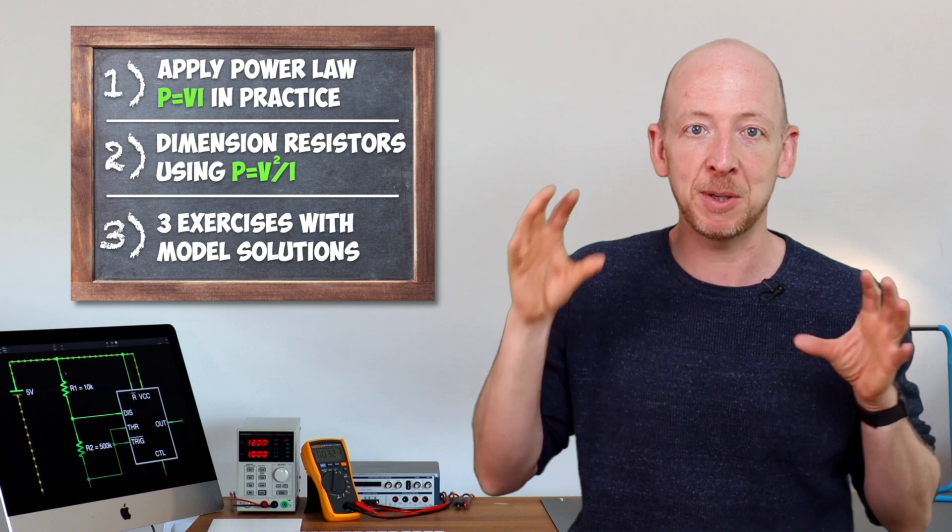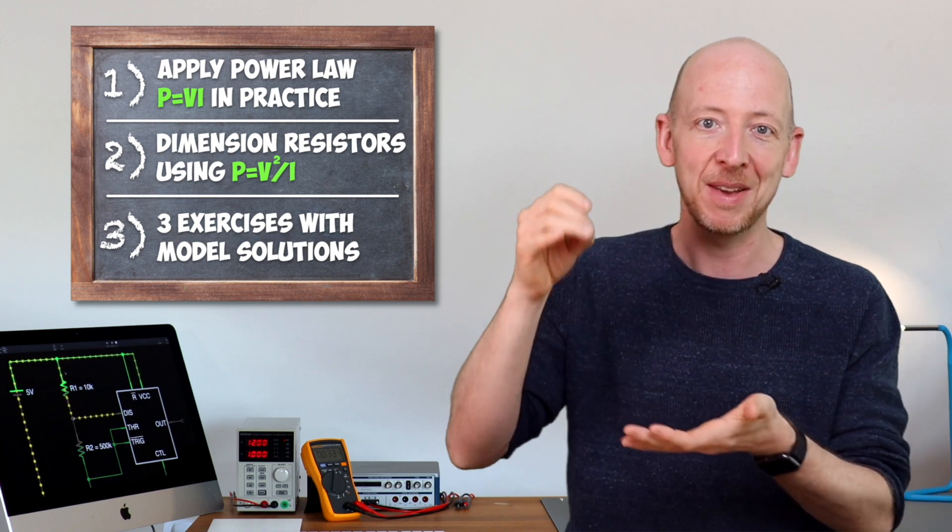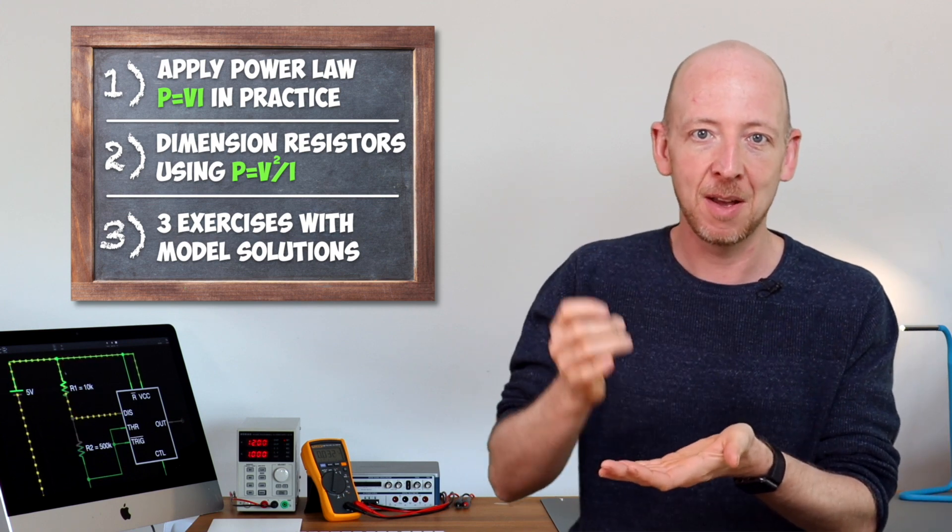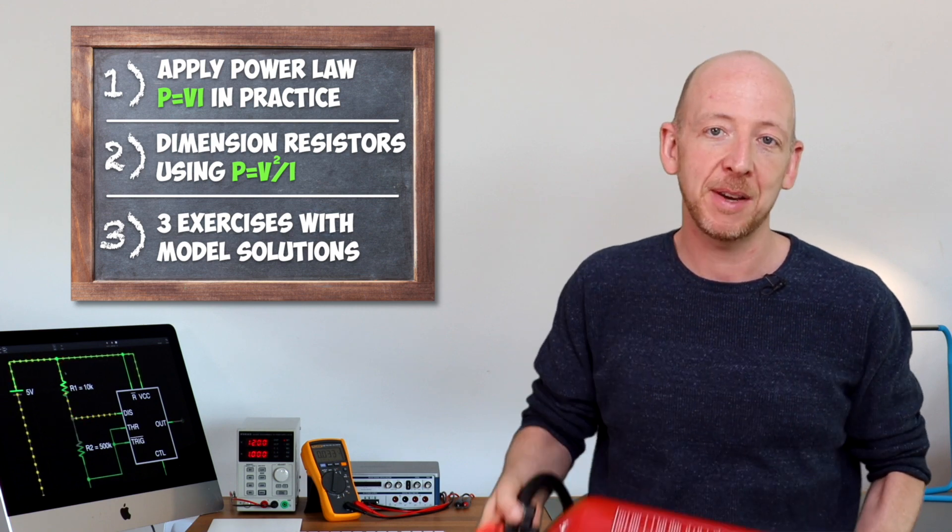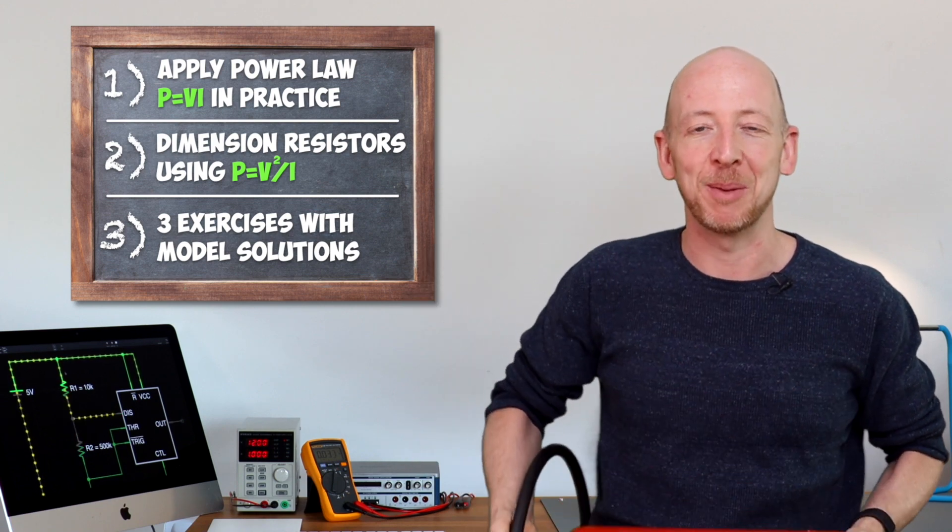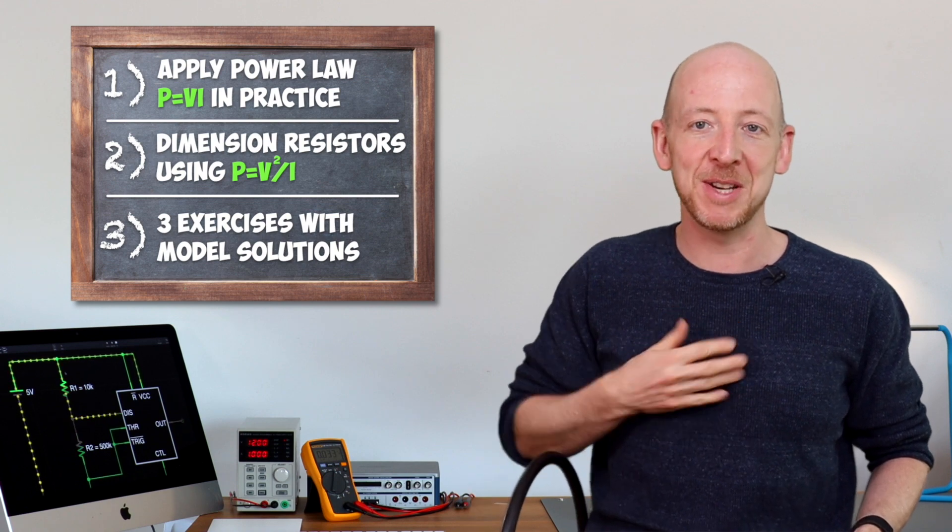And finally we will do an experiment in which you can see what happens if you intentionally exceed the power limit of a 15 ohm resistor by a factor of 20. Now the fire extinguisher here is already on standby. My name is Andreas from The Fearless Engineer and here we go.